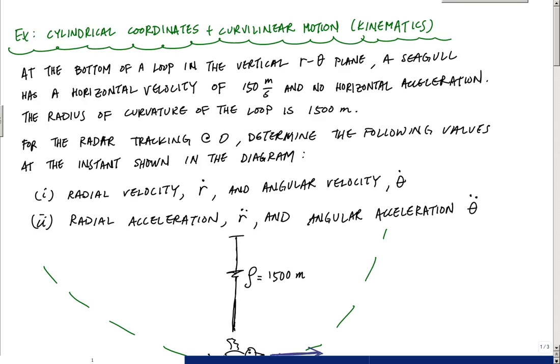In this case, it'll be a bird moving in a circular loop in the vertical R theta plane. And this seagull has a horizontal velocity. It's fast, 150 meters per second, and no horizontal acceleration. So that no horizontal acceleration is a clue that's saying that the tangential component of acceleration here is zero. And the radius of curvature of the loop is 1,500 meters.